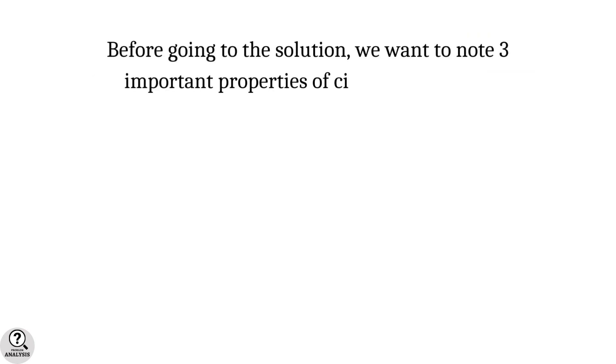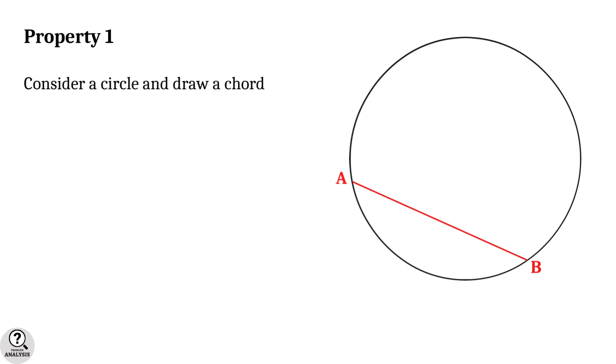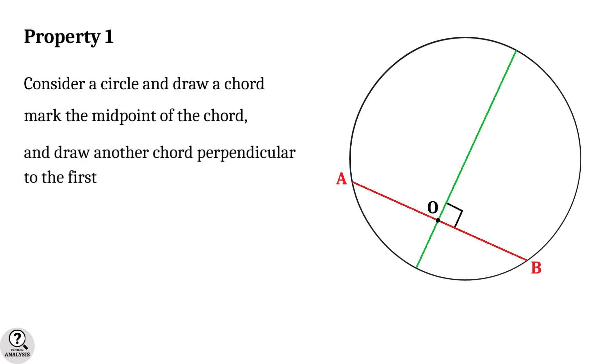Property 1: Consider a circle and draw a chord. Now mark the midpoint of that chord and draw another chord that is perpendicular to the first chord through the midpoint. Then the fact is that this chord is a diameter of the circle.